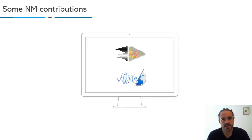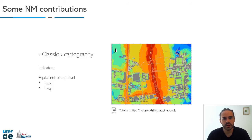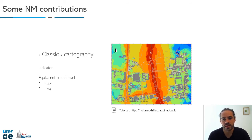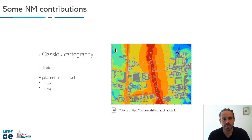I wanted to show you some noise modeling contributions. With noise modeling, you can do a classic cartography. This is a cartography from OpenStreetMap proposed in the second tutorial in our documentation. It can give you classic equivalent noise level indicators like LDEN or LAeq.